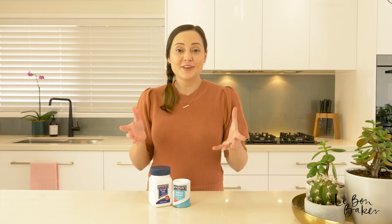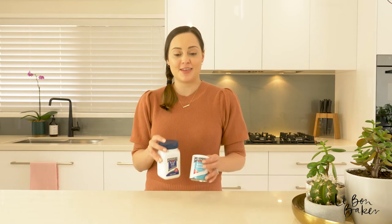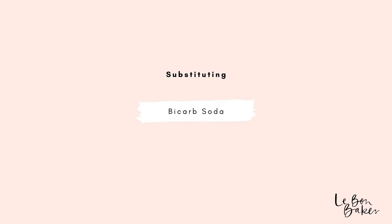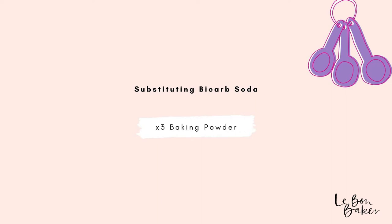If you've got a recipe and you've only got either baking soda or baking powder in your kitchen, you can substitute one for the other, but there are a couple of things you need to be aware of. First up, let's talk about substitution of bicarb soda. Bicarb soda is three times more powerful than baking powder, so if you're going to substitute, I'd recommend using three times the amount of baking powder in lieu of your baking soda.